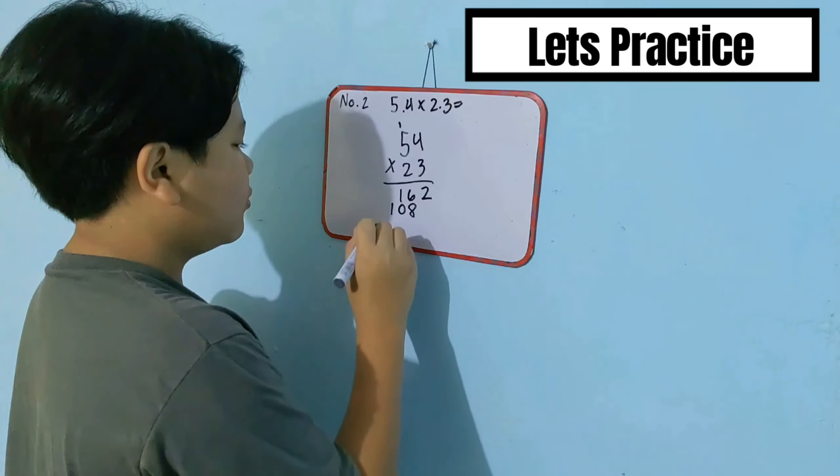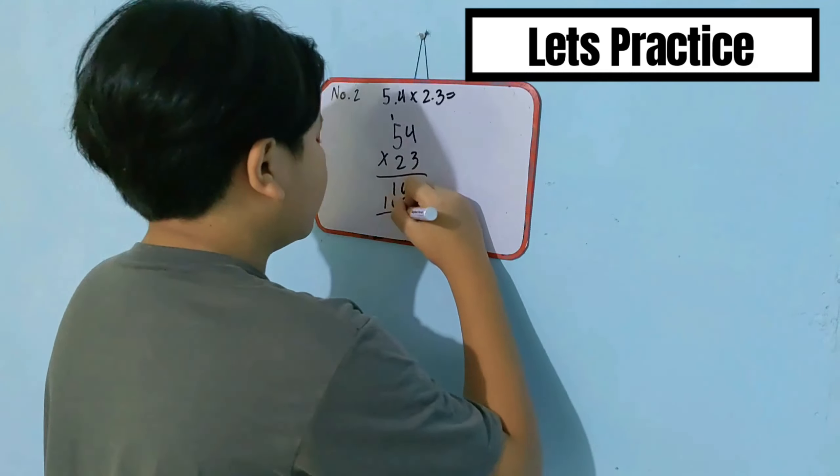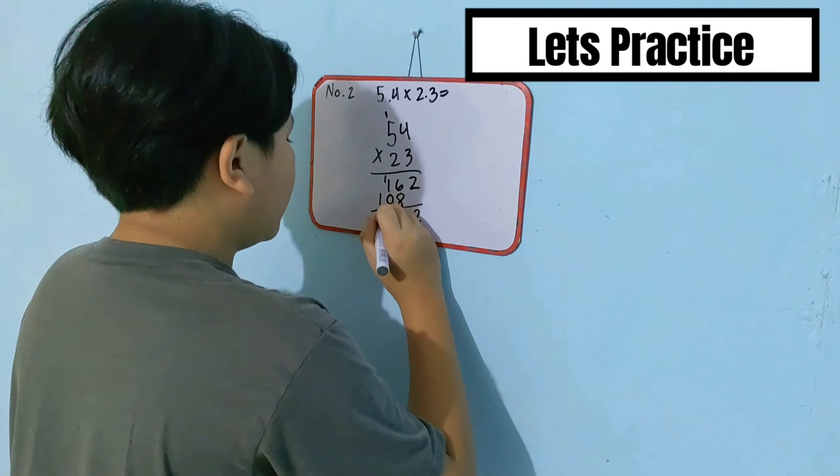Now, add them. Bring down 2. 8 plus 6 is equal to 14. 1 plus 1 is equal to 2. Bring down 1.